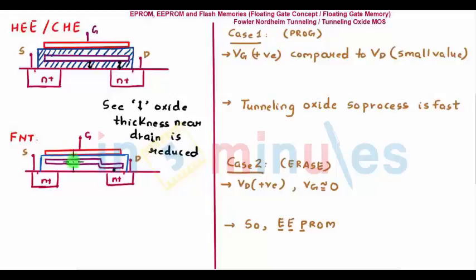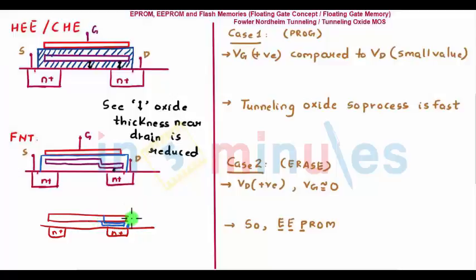The key change in Fowler-Nordheim tunneling is the shape of the polygate and the oxide thickness (TOX). Initially the polygate covered both drain and source, with a certain TOX at the drain side. In EEPROM, the TOX is drastically reduced near the drain side, creating a tunneling oxide. With a very thin oxide and a high gate voltage, gate tunneling occurs due to the vertical electric field given by VGS divided by TOX.